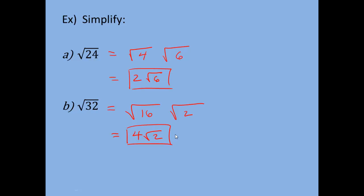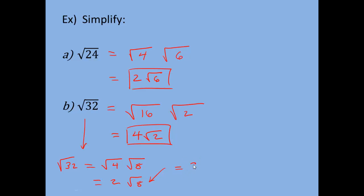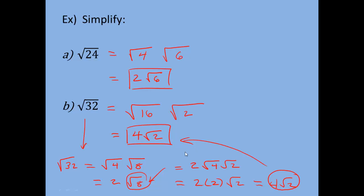If you didn't choose the highest perfect square — so in this case if we didn't choose 16, instead we said the square root of 32 can break down into the square root of 4 times the square root of 8 — well, 4 is a perfect square, so this breaks down to 2√8. But that's not simplified completely, because √8 can also be broken down. The square root of 8 has a perfect square factor of 4, so it becomes √4 × √2, which is 2 × 2 = 4, times √2. You get the same answer, but it takes longer. That's why you want the highest perfect square factor — so you simplify it completely right away.